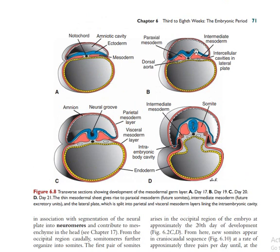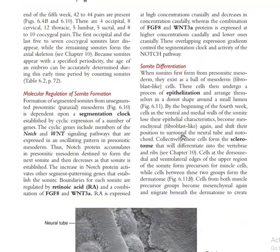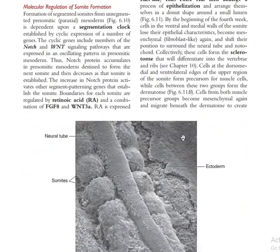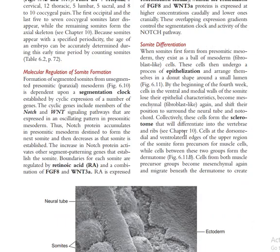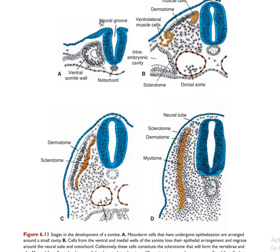As the neural folds enclose, the somites take an increasingly dorsal position. In cross-section you have the neural groove, the ventral somite wall, and the notochord. The notochord is used to establish laterality and to maintain the direction of cell movement.